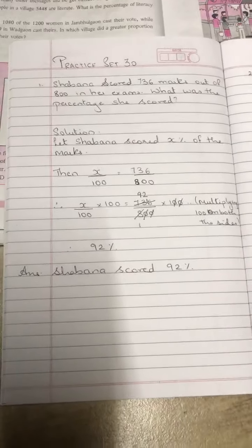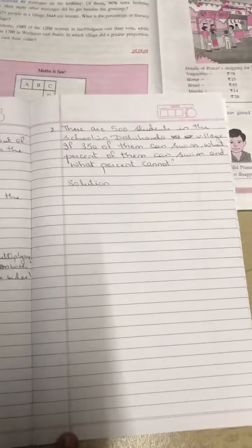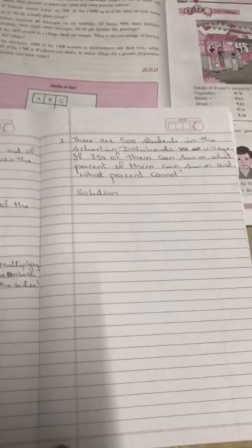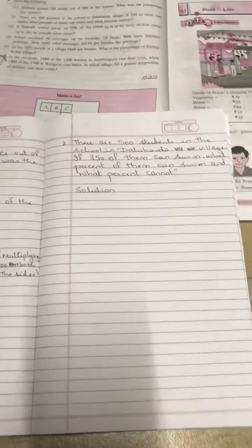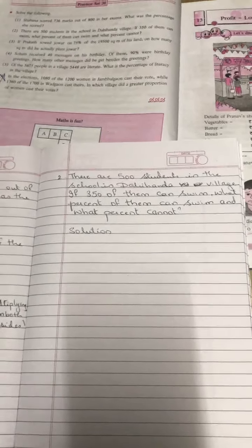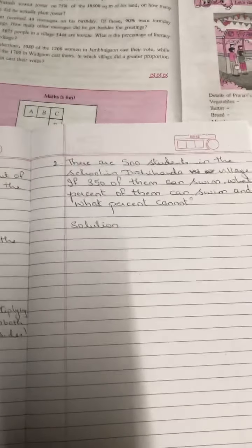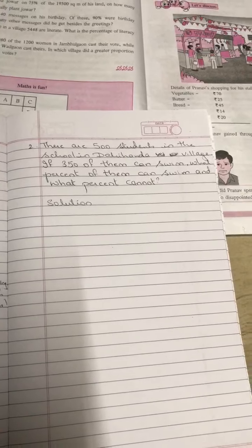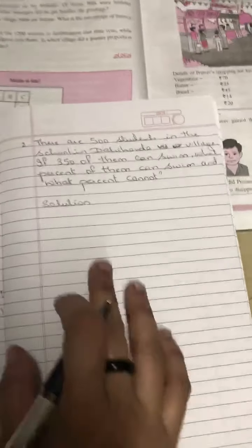Same way we are going to solve the second sum. Second sum is: there are 500 students in the school in Dahihanda village. If 350 of them can swim, what percent of them can swim and what percent cannot?